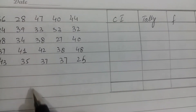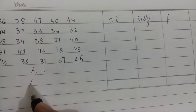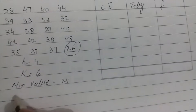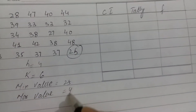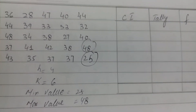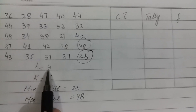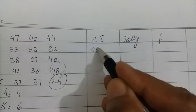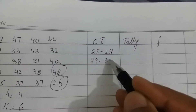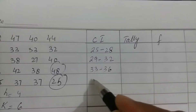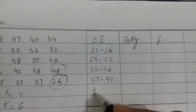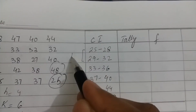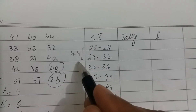With h equals 4 and k equals 6, starting from the minimum value 25, the class intervals are: 25–28, 29–32, 33–36, 37–40, 41–44, and 45–48. The maximum observation 48 is included. The width can be verified: 29 minus 25 equals 4.